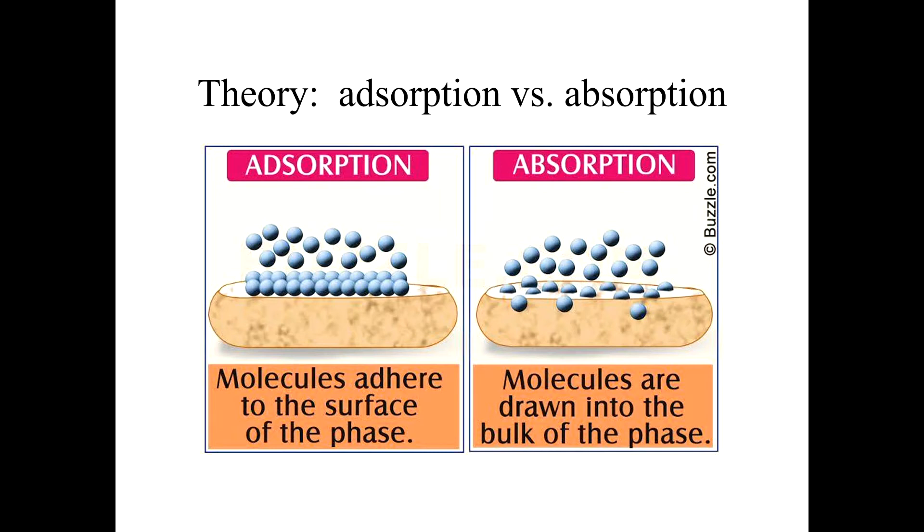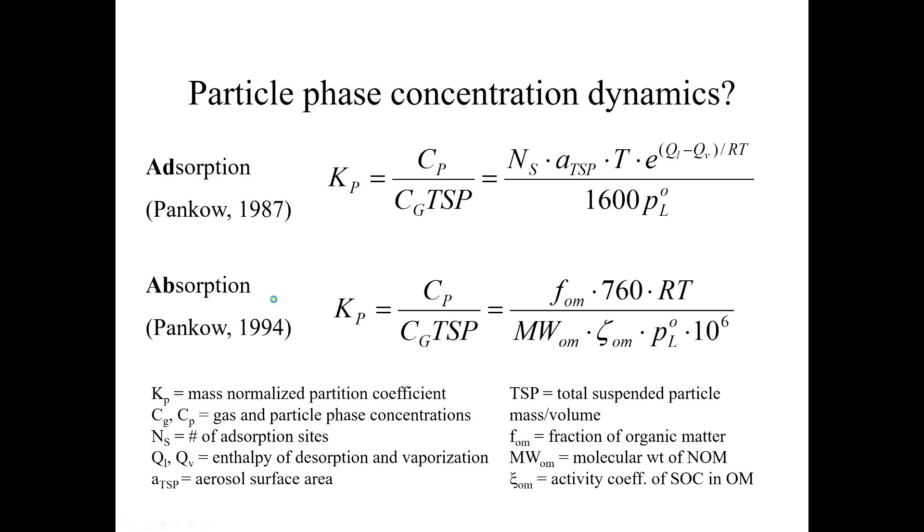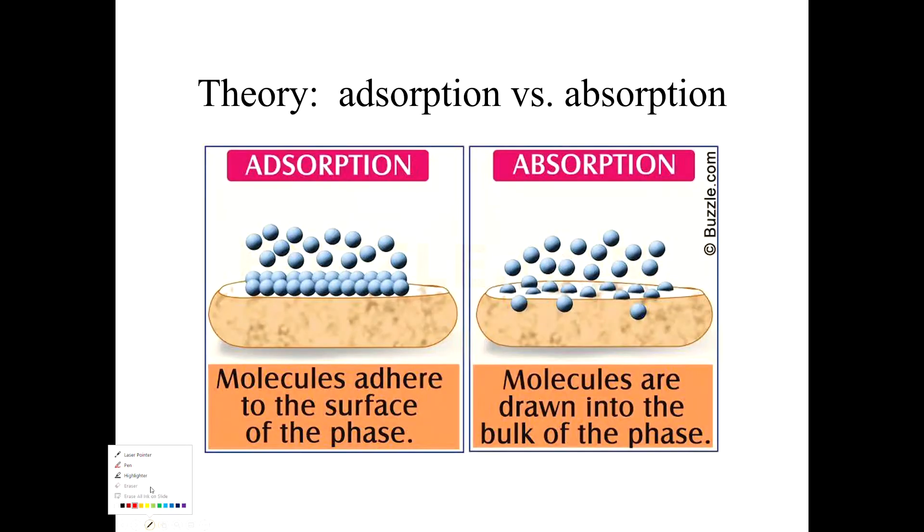Adsorption with a D is where the chemical sits on the surface of a three-dimensional object, sitting on a 2D surface. Absorption with a B is where the chemical can actually penetrate into the center of this three-dimensional matrix. The mechanism of absorption has important implications for how the chemical is going to behave. If we're not sure whether it's adsorption or absorption, we just call it sorption.